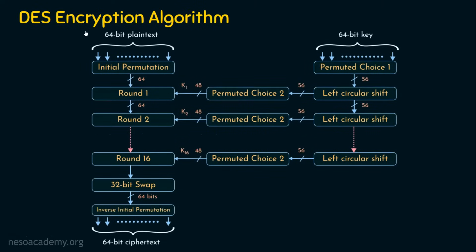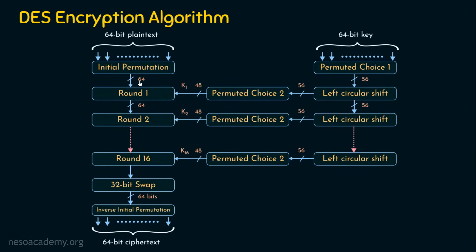In the last presentation, we saw the DES encryption algorithm, where this algorithm takes a 64-bit plaintext and converts it into a 64-bit ciphertext. The 64-bit plaintext is given to the initial permutation function and the position of the bits are changed. The output of this initial permutation is 64 bits, which then goes to the round function, where it accepts the round key of 48 bits. Starting from round 1 with key K1, it proceeds through round 2, round 3, round 4, and so on, finally completing round 16 with K16. Then the 64 bits are given to a swap function, which swaps the left-hand side 32 bits and the right-hand side 32 bits, and the 64-bit output is given to the inverse initial permutation function, where the position of the bits are changed, and finally we get the 64-bit ciphertext.